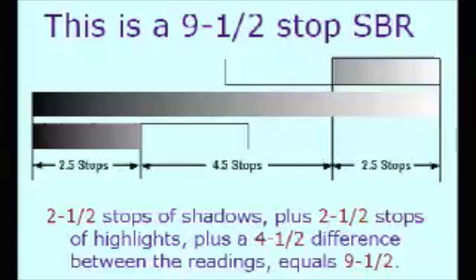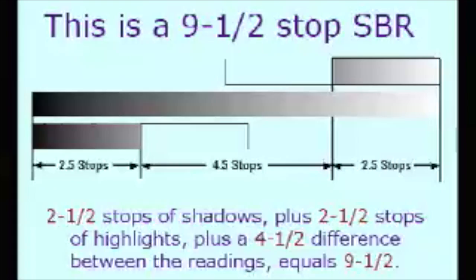Longer ranges are calculated the same way: subtract the low EV from the high EV and add the difference to 5. In this case, 2 and a half stops of low values, plus 2 and a half stops of high values, plus the 4 and a half stop difference between the readings, add up to a 9 and a half stop SBR.